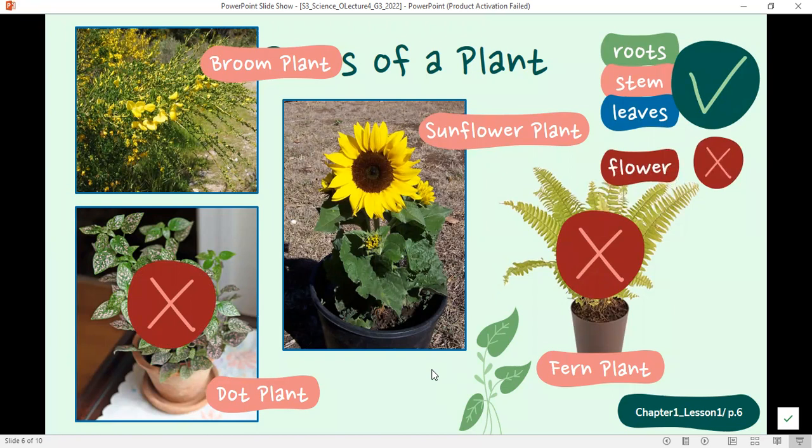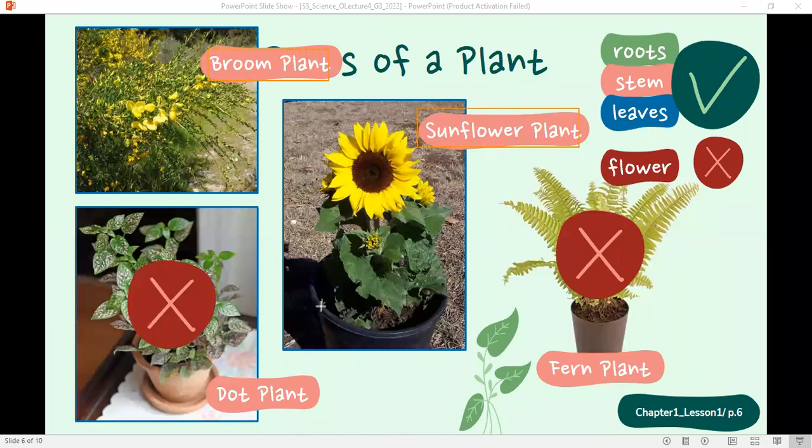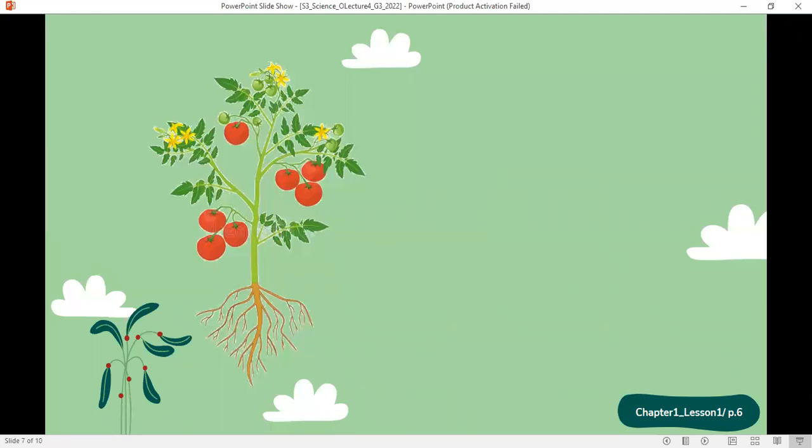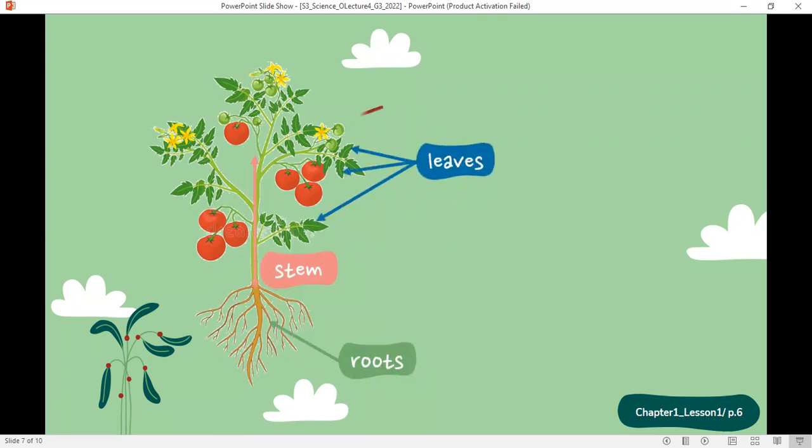On the other side, we have the broom plant, which is a flowering plant, growing yellow flowers. Here is the tomato plant. Do you think it is a flowering plant or a non-flowering plant? Here are the roots of the tomato plant. This is the stem of the tomato plant. And the green parts are the leaves. What about this yellow part? This is the flower. So the tomato plant is a flowering plant.